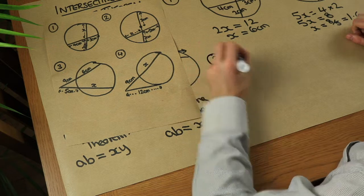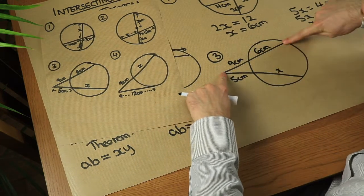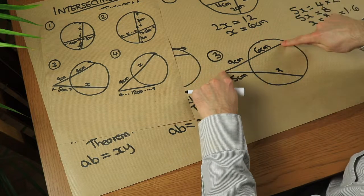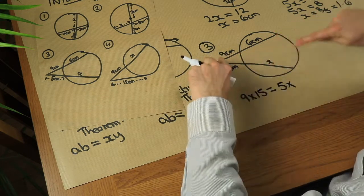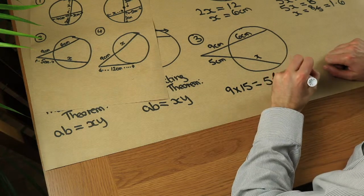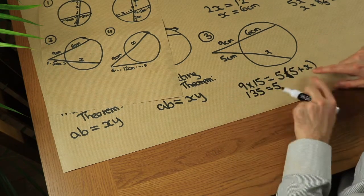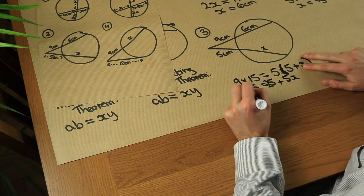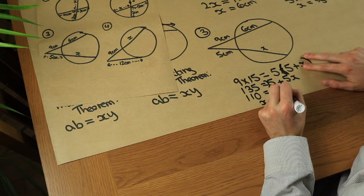Now what about question 3? We've got intersecting secants this time. So remember it was this length times this length is equal to this length times this length. So if we first do this length times this length, we've got 9 times 15, haven't we? So we've got 9 times 15, not 9 times 6, is equal to 5 times this length, which is 5 plus x. So in fact, let's do that as a bracket, 5 times 5 plus x. So let's expand that out. 5 times 5 is 25, and 5 times x is 5x. Now if we subtract 25 from both sides, we get 110 is equal to 5x, and that means x is 110 over 5, which is equal to 22.